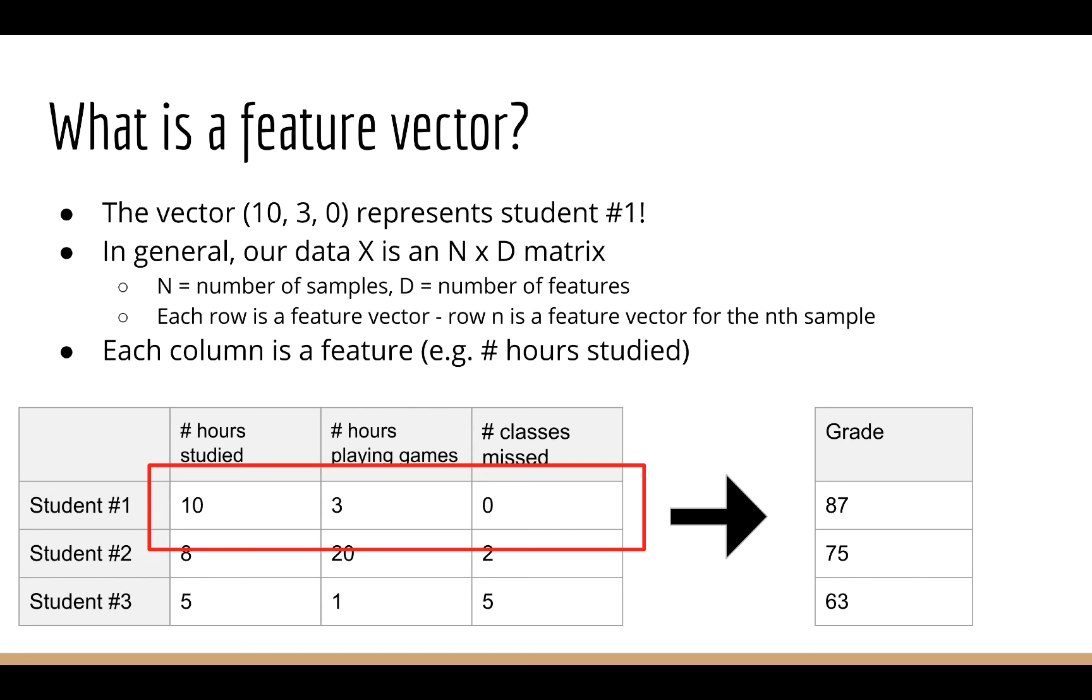So for this particular example, student number 1's feature vector is 10, 3, 0. Each individual element we call a feature. So for example, how many hours you studied is a feature.